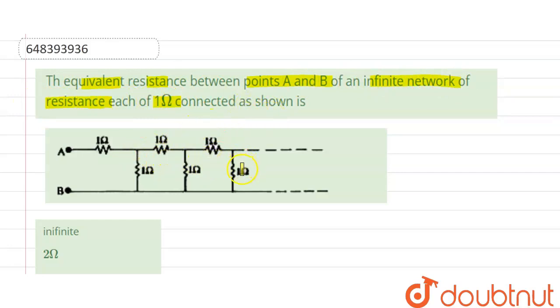We are shown a network of infinite resistances. We are asked to find out the equivalent resistance between points A and B. So here we have a network of infinite resistances. Let the equivalent resistance of these resistances be R.